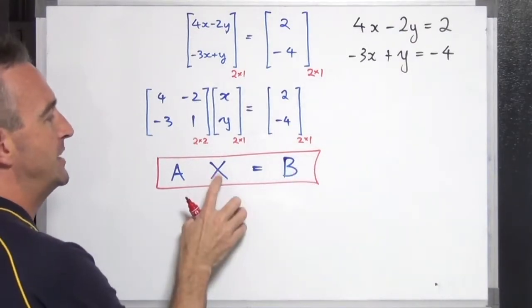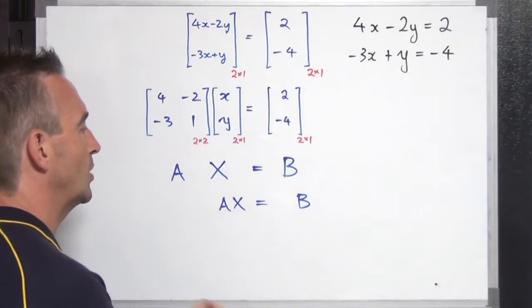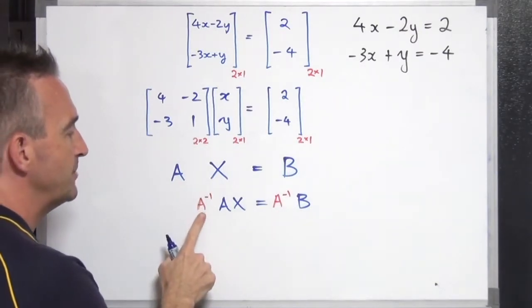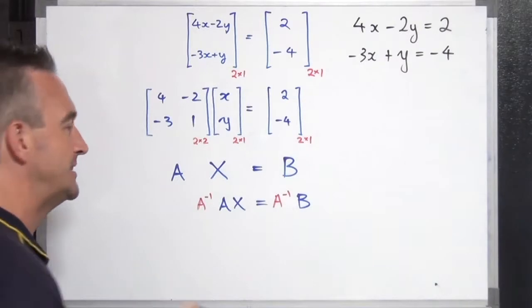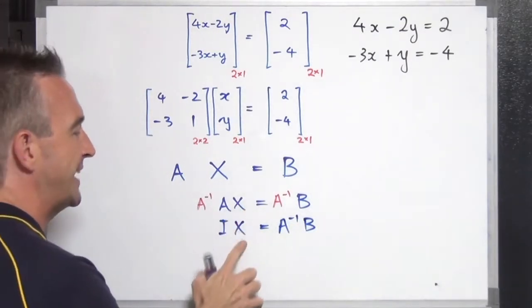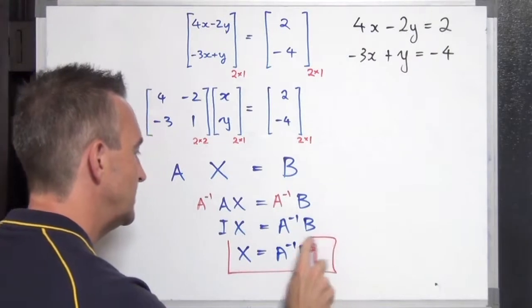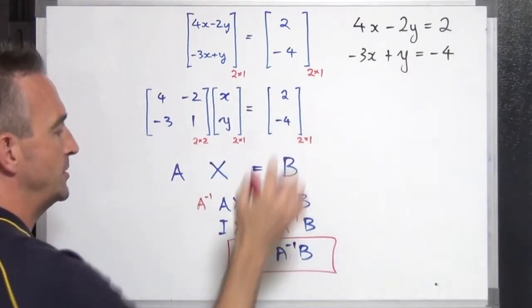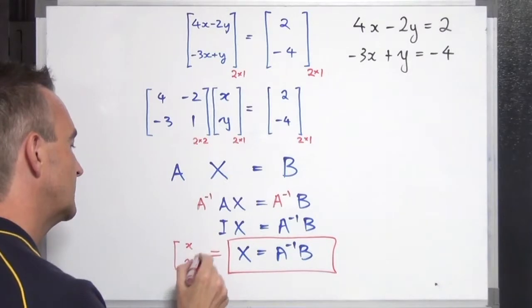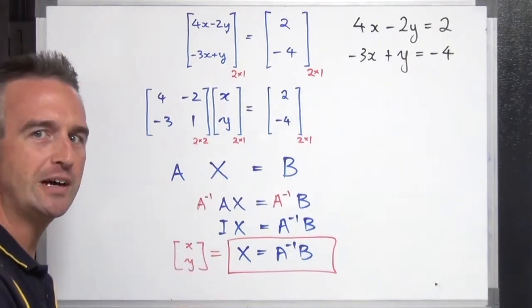Every system of equations, if we're going to solve it in matrix form, can be written as matrix A times matrix X equals matrix B. What we're looking for is matrix X. Once we find matrix X, we know what x and y are. To solve this, we multiply both sides on the left by the inverse of matrix A. The inverse of A times A gives the identity matrix, and the identity matrix times X just equals X. So our solution is X equals A inverse times B.